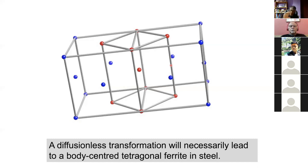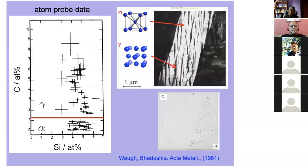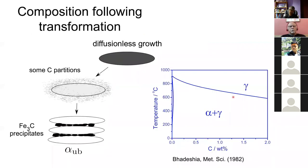When the displacive transformation happens it leads to tetragonal bainitic ferrite, even if that is not favored by ordering. At high transformation temperatures you do not favor the ordering of carbon atoms on one set of cell edges. This got me thinking — maybe we are looking at the wrong equilibrium. We normally consider the equilibrium between body-centered cubic ferrite and face-centered cubic austenite, but maybe we should look at the equilibrium between tetragonal ferrite and austenite.